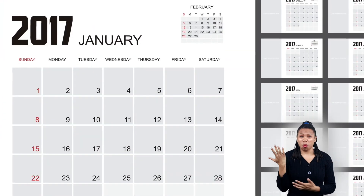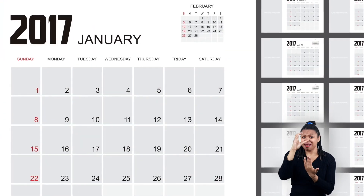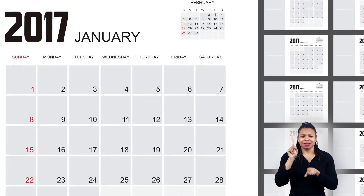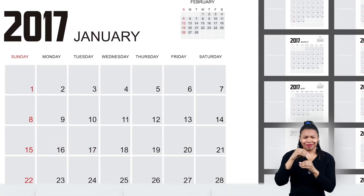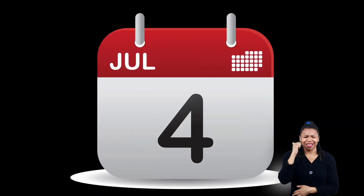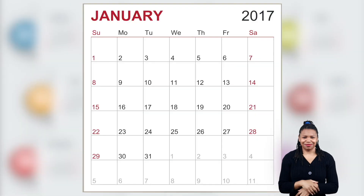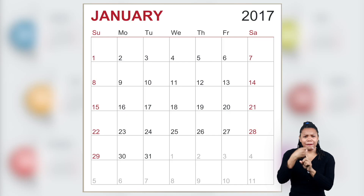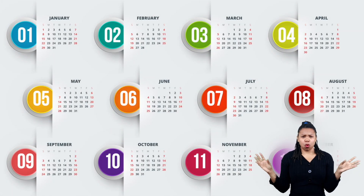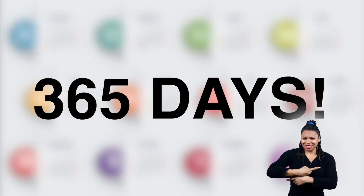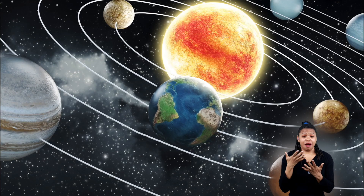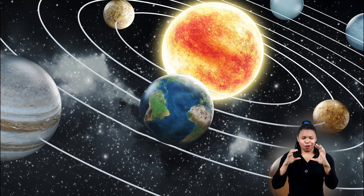What exactly is a calendar? A calendar is basically a chart showing the different days of the year. There are yearly, monthly, weekly, and daily calendars. Most calendars show one month at a time, but there are some that show the entire year, which is usually 365 days.